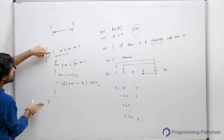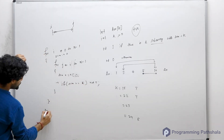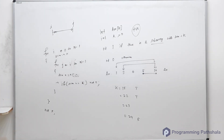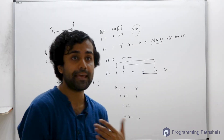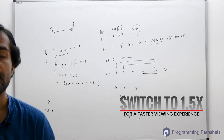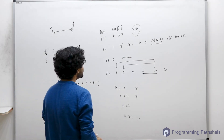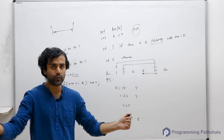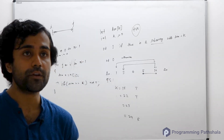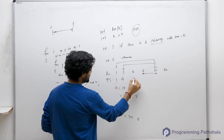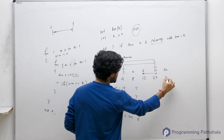If none of the pairs (i, j) satisfy the condition, return false. Now, can we improve this? Thinking about prefix sum — for an array with all positive elements, how will the prefix sum array look? It will be sorted. For our example array [1, 3, 4, 5, 10, 20], the prefix sum is [1, 4, 8, 13, 23, 43].